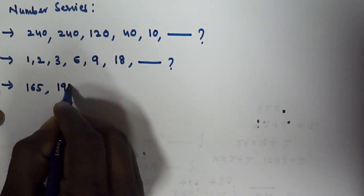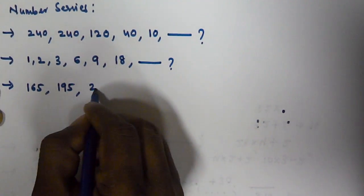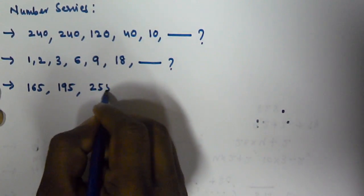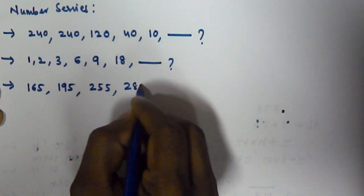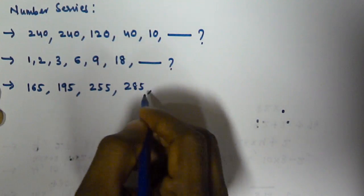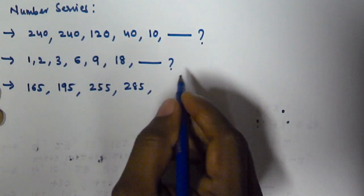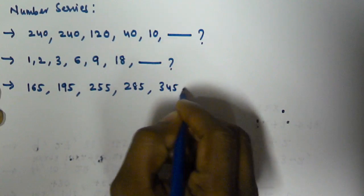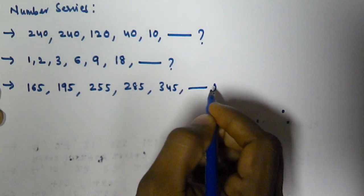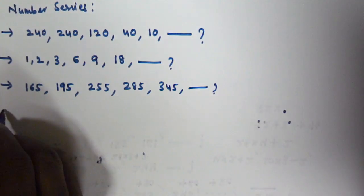The next problem is 165, 195, 255, 285, 345 — so what number comes next in this series?